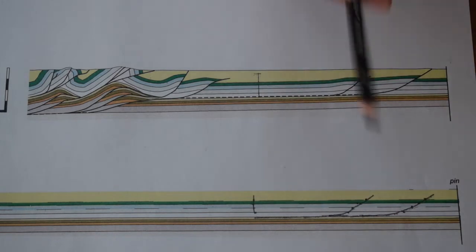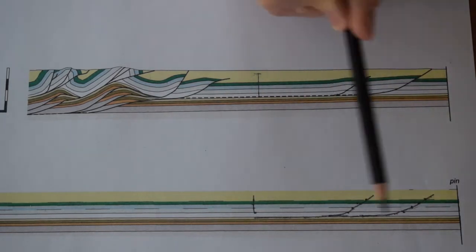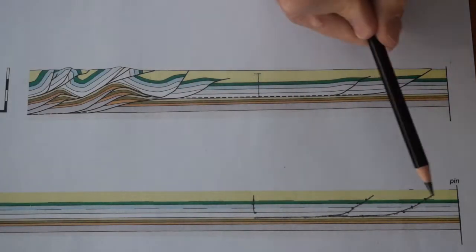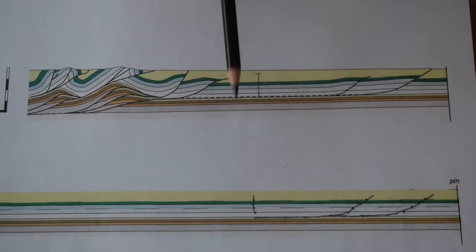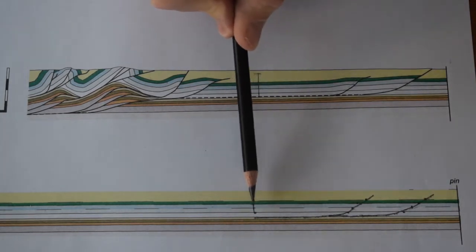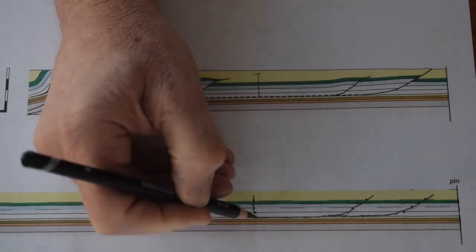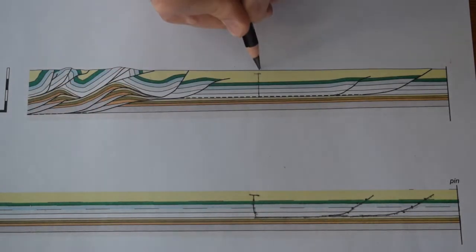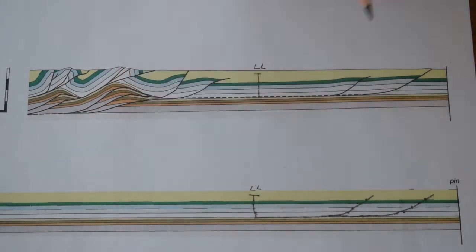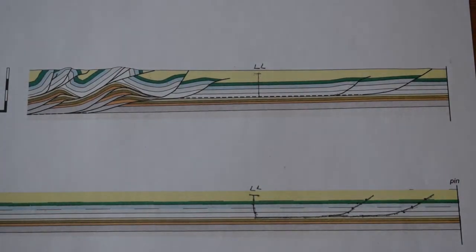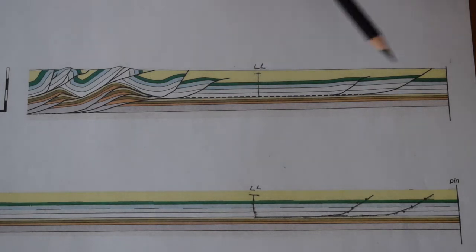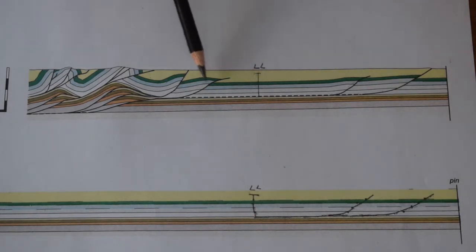The thrust climbs into the yellow rocks. The key point is that our loose line is more or less perpendicular after restoration, so we're in good shape. The frontal structures restore and they retain bed length from layer to layer through the thrust structures.